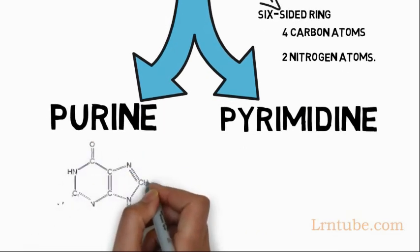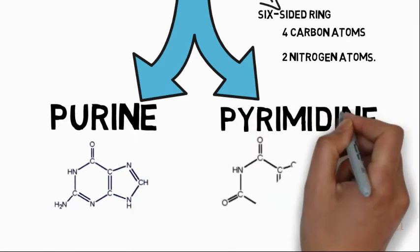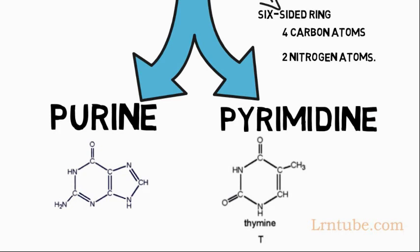A purine has additional five-sided ring created by one carbon atom and two nitrogen atoms, while pyrimidines have just one six-sided ring.